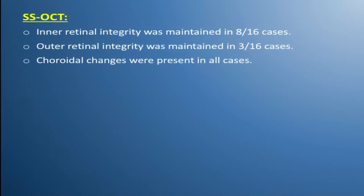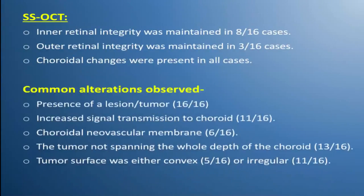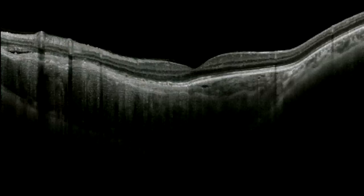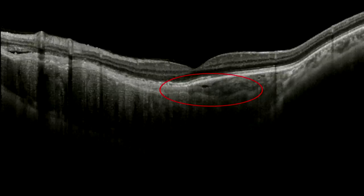On swept source OCT, inner integrity of the retina was maintained in 8 cases; outer retinal integrity was maintained in 3 out of 16 cases. Choroidal changes were present in all cases, which included: presence of a tumor in all, increased signal transmission of the choroid in 11, neovascular membrane in 6, tumor not spanning the whole depth of choroid in 13, and tumor surface being irregular in 11 or convex. The most common reflectivity pattern was the lamellar pattern, which was a line of granular hyperreflectivity.